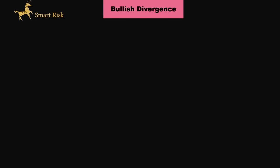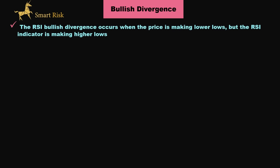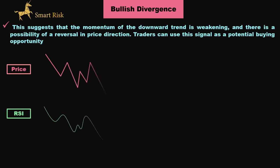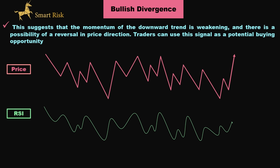On the other hand, the RSI bullish divergence occurs when the price is making lower lows, but the RSI indicator is making higher lows. This suggests that the momentum of the downward trend is weakening, and there is a possibility of a reversal in price direction. Traders can use this signal as a potential buying opportunity. For example, if we have points A and B on the price chart and draw a line between them, it is obvious that price is forming lower lows. However, when we look at the corresponding A and B points on the RSI chart and draw a line through them, we can see that the RSI is making higher lows — so this indicates a bullish divergence signal.